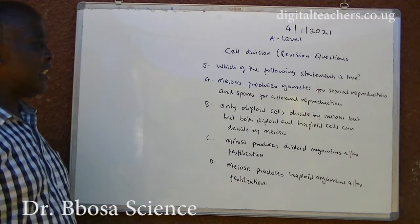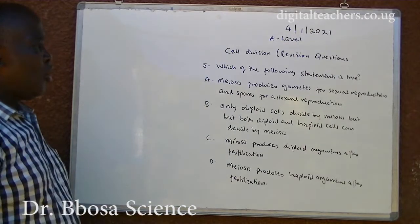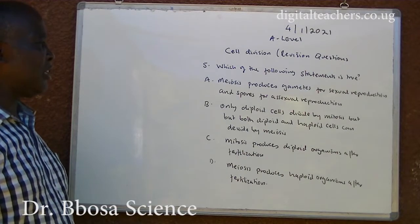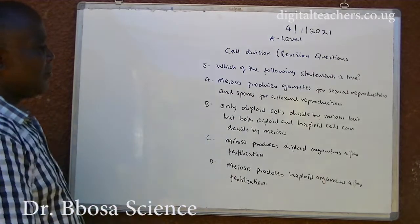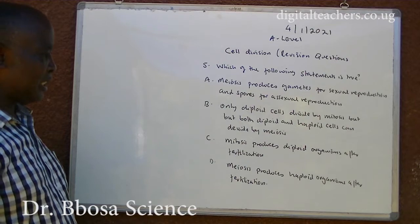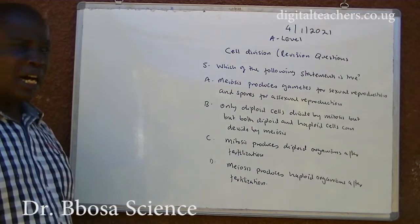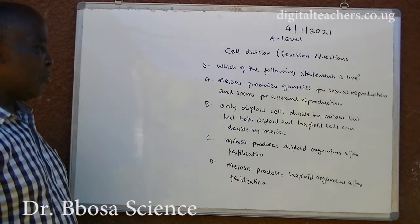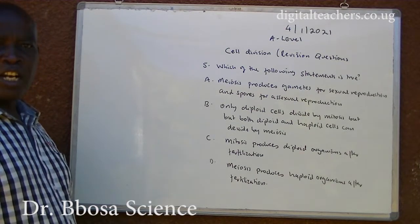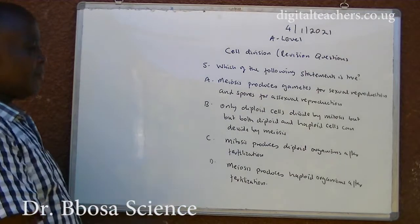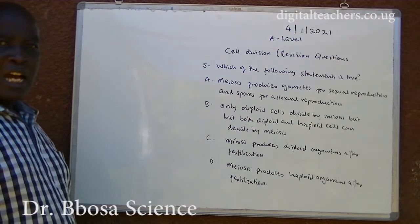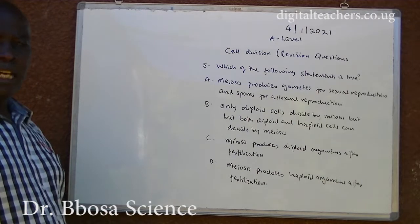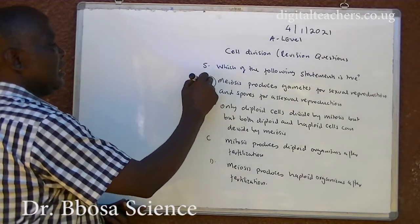Number 5. Which of the following statements is true? A. Meiosis produces gametes for sexual reproduction and spores for asexual reproduction. B. Only diploid cells divide by mitosis, but both diploid and haploid cells can divide by meiosis. C. Mitosis produces diploid organisms after fertilization. You can pause and answer. The answer is A.